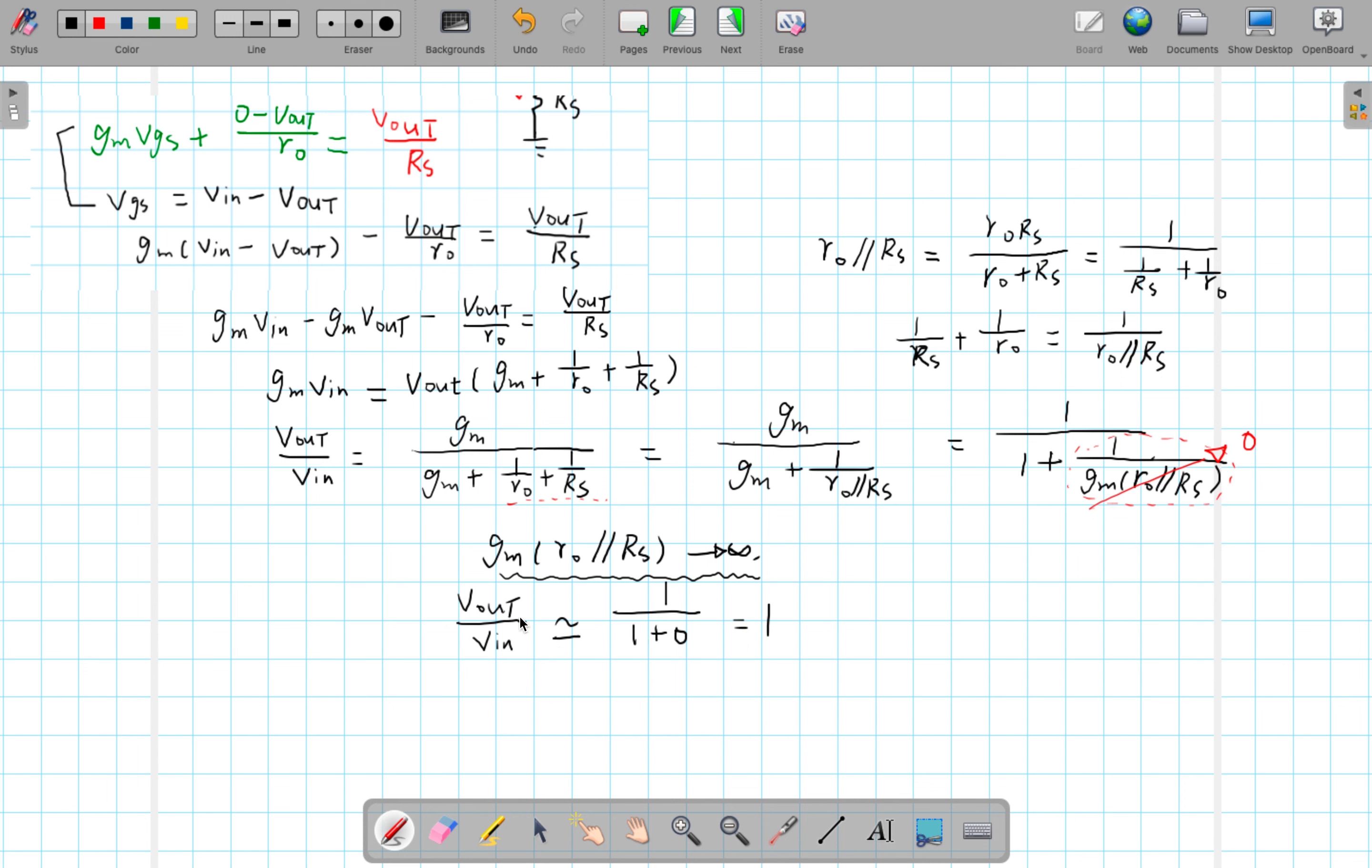So what this tells us is that in a common drain configuration, the ratio of the output voltage and the input voltage is 1. This circuit, this is why we call it a source-follower transistor configuration. It can be used as a voltage buffer that provides a unity gain in circuit design. So this is our A-sub-V.